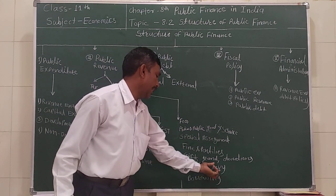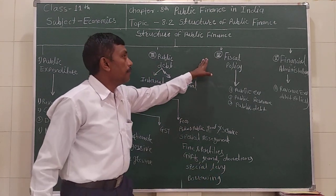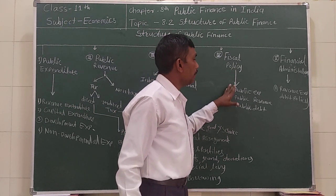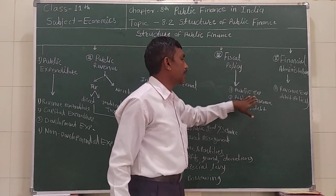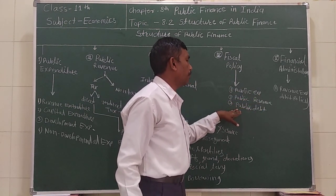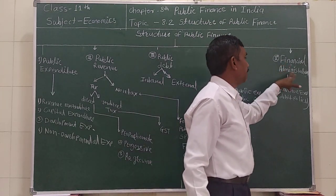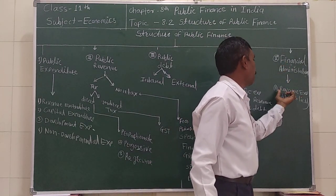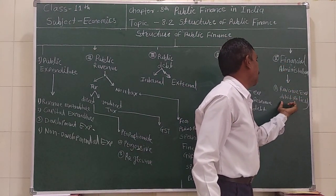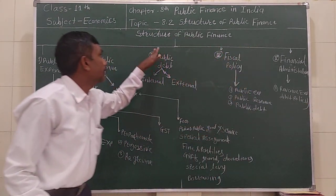The fourth component is fiscal policy, which covers public expenditure, public revenue, and public debt. The fifth is financial administration, which deals with the revenue expenditure and debt policy.